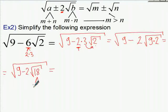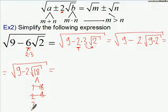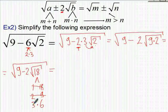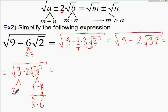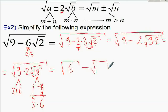Now we find two numbers whose product makes 18 and sum makes 9. Checking: 1×18 gives sum 19, not 9. 2×9 gives sum 11, not 9. Then 3×6 makes 18 and 3 plus 6 is 9. The bigger number is 6, so the answer is square root of 6 minus square root of 3, which cannot be simplified further.